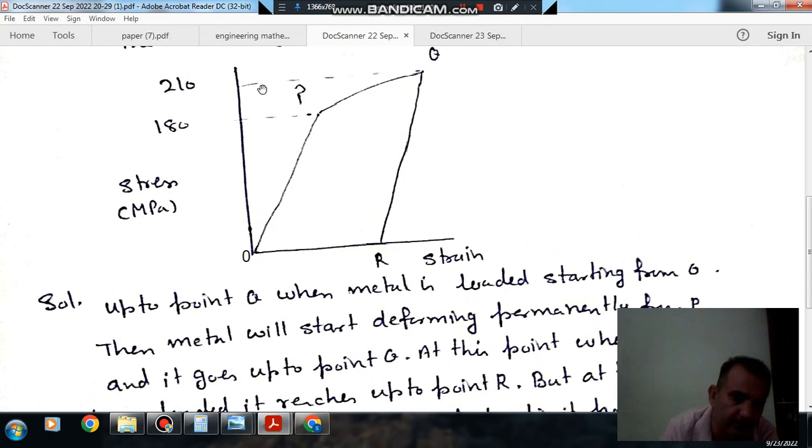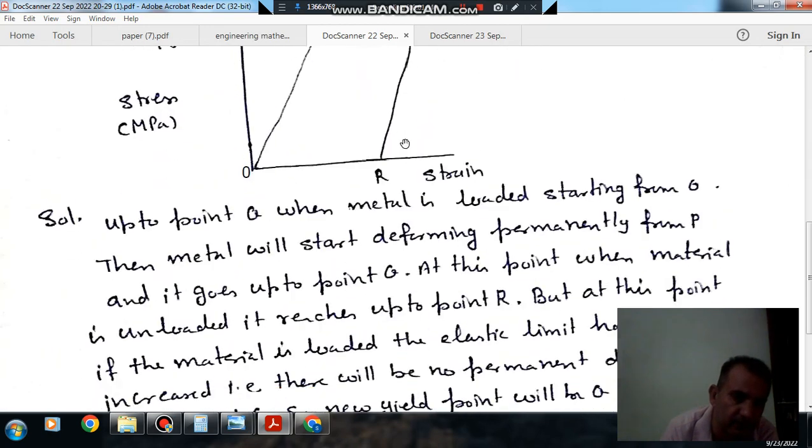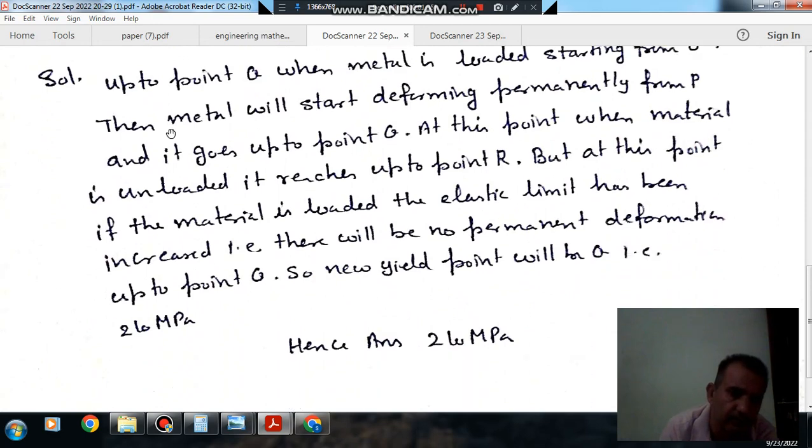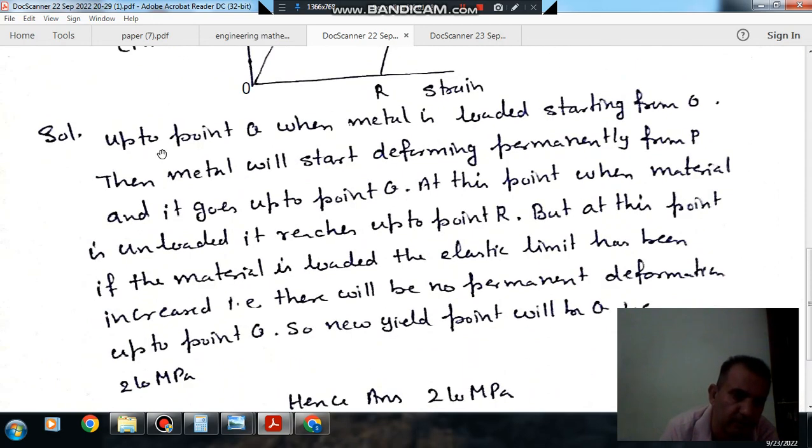So the new yield point is here at 210 MPa. When the metal is loaded starting from O, the metal will start deforming permanently from P and it goes on up to Q. Yielding starts at point P and it will go up to point Q.